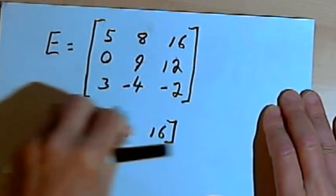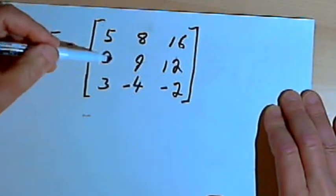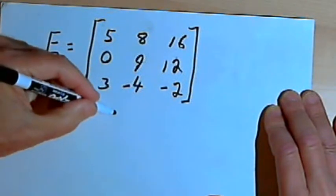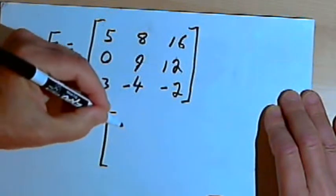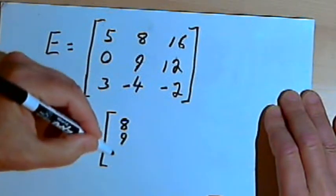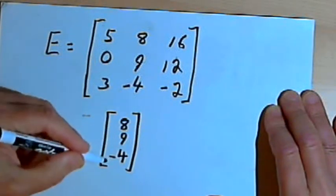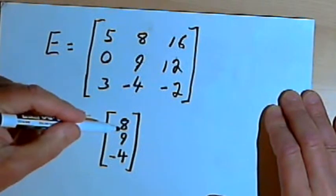I could also talk about the column matrices within this. So I could take, let's say, the second column and I could make a matrix out of that. That would be 8, 9, and negative 4. So that would be a 3 by 1 column matrix.